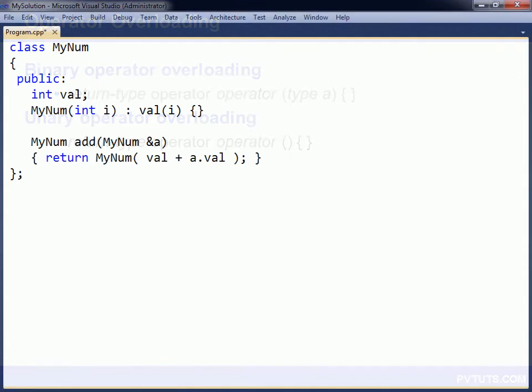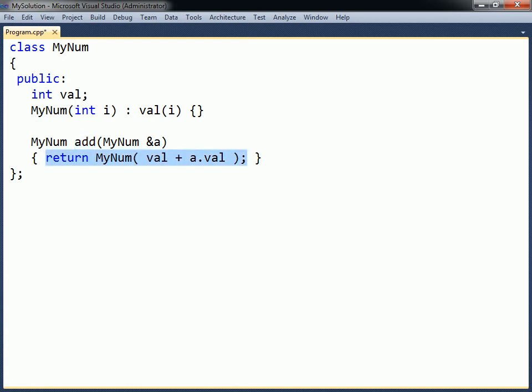In this sample code there is a class called MyNum with an integer field and a constructor for setting that field. The class also has an addition method which adds two MyNum objects together and returns the result as a new object.